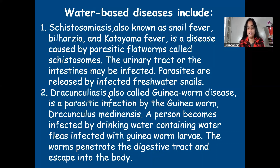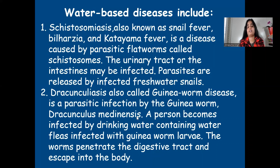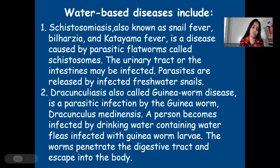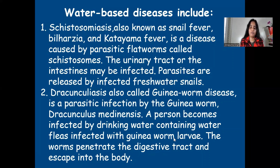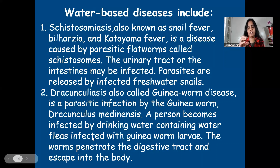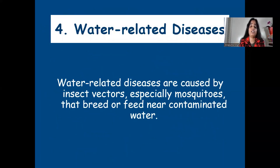Dracunculiasis, also called guinea worm disease, is a parasitic infection by the guinea worm Dracunculus medinensis. A person becomes infected by drinking water containing water fleas infected with guinea worm larvae. The worms penetrate the digestive tract and escape into the body, causing this disease. The guinea worm parasite lives inside water fleas.